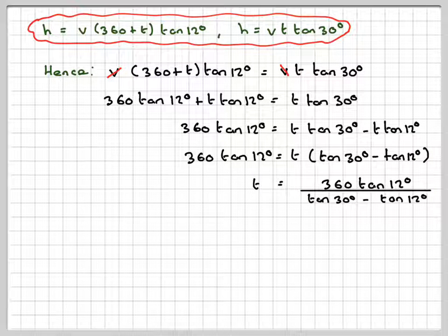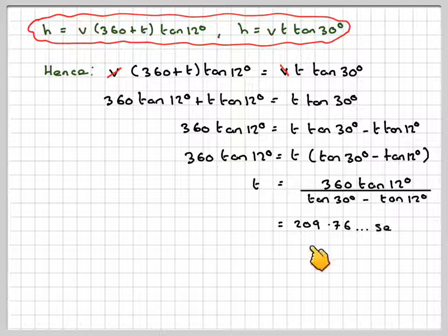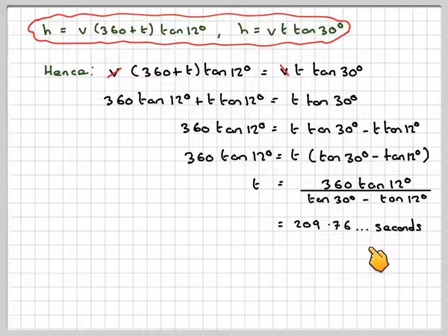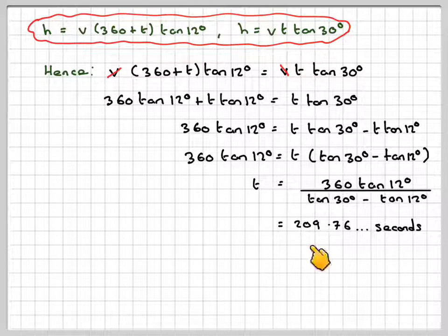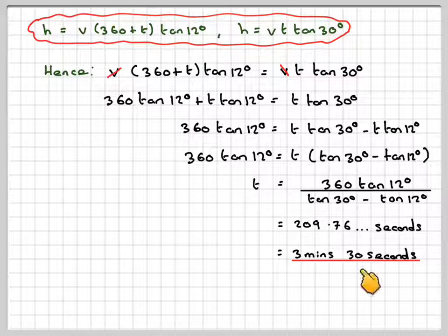On our calculator, we're going to use the fraction button, which gives you 209.76 seconds. If you divide that by 60, that will give you three minutes and the remainder, which is about 0.49.